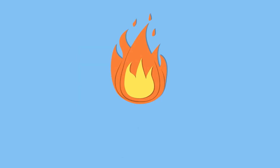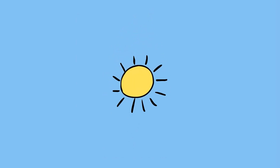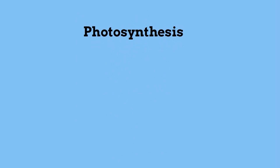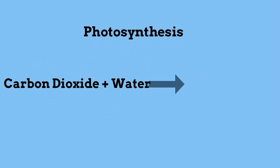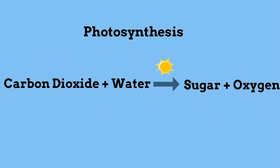Autotrophs produce their energy from the sun in a chemical process called photosynthesis. They take carbon dioxide plus water and sunlight and produce sugar and oxygen.